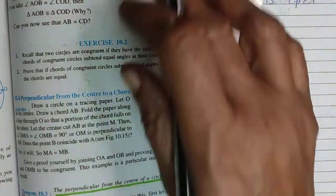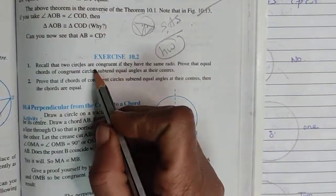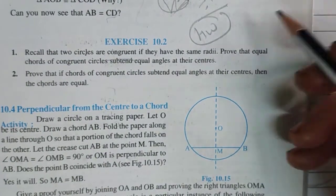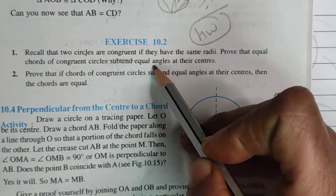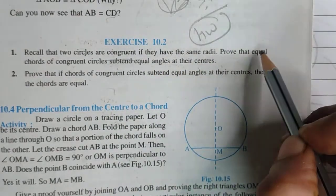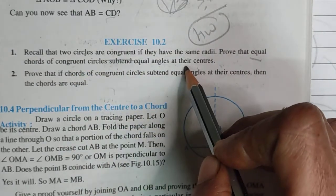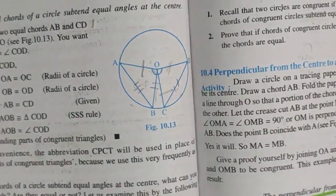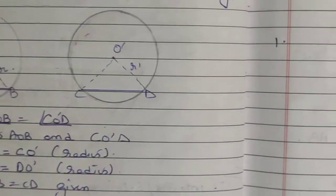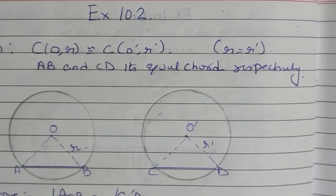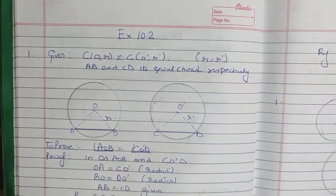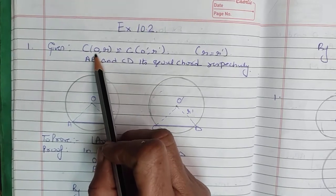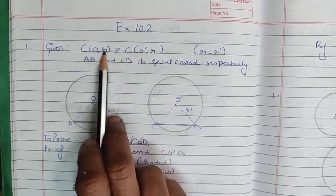Recall that two circles are congruent — congruent circles have the same radius. We have to prove that equal chords of congruent circles subtend equal angles at the center. We need to prove that chords being equal means they make equal angles at the center. The difference from before is that now we draw two different circles — congruent circles. We write C for circle, O for center, and R for radius.